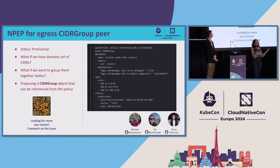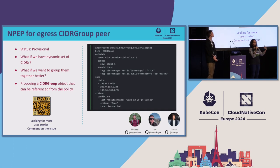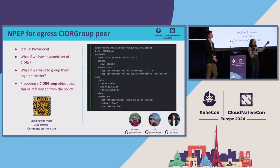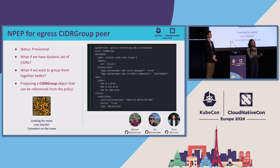The next NPEP is the CIDR group peer, a continuation of the previous one. When we did the egress NPEP, networks was an inline peer — you put your CIDR blocks within the ANP and BANP. If you have multiple CIDRs or a dynamic set that keeps changing, you might want a separate object called CIDR group, and then refer to it from your ANP or BANP. This NPEP is currently in the provisional state — shout out to Michael and Joe who proposed the user stories. If you have use cases, please comment on the NPEP.